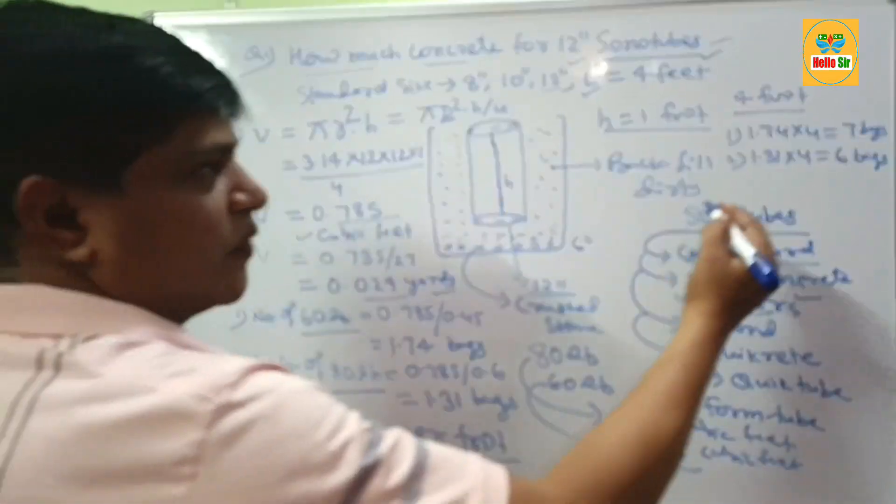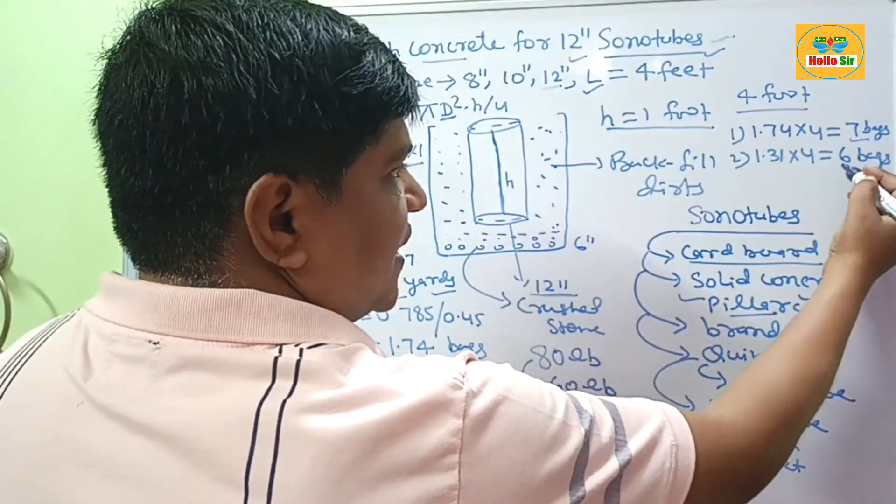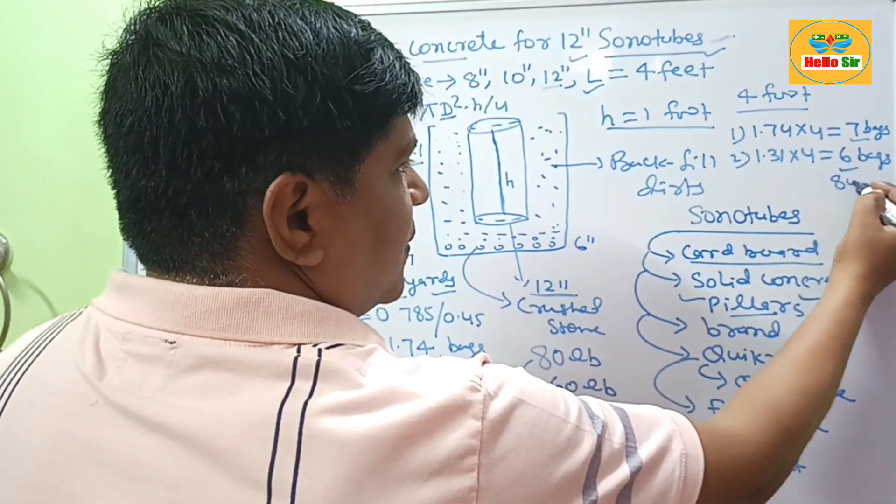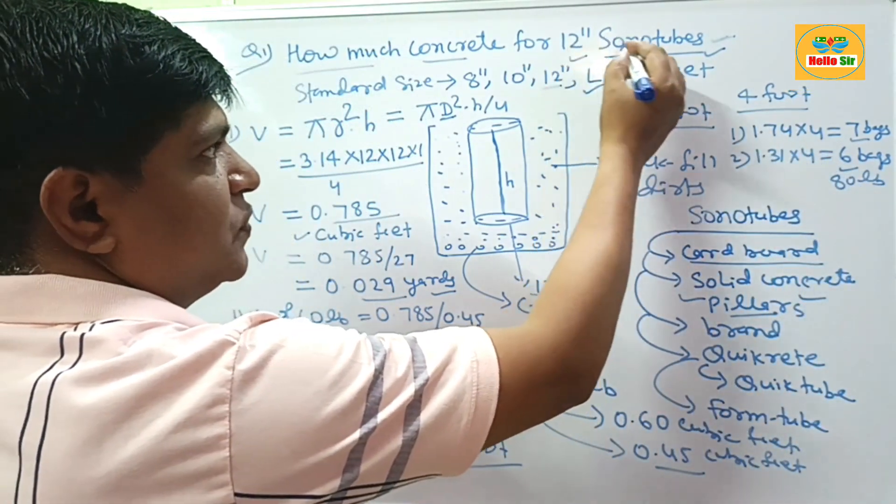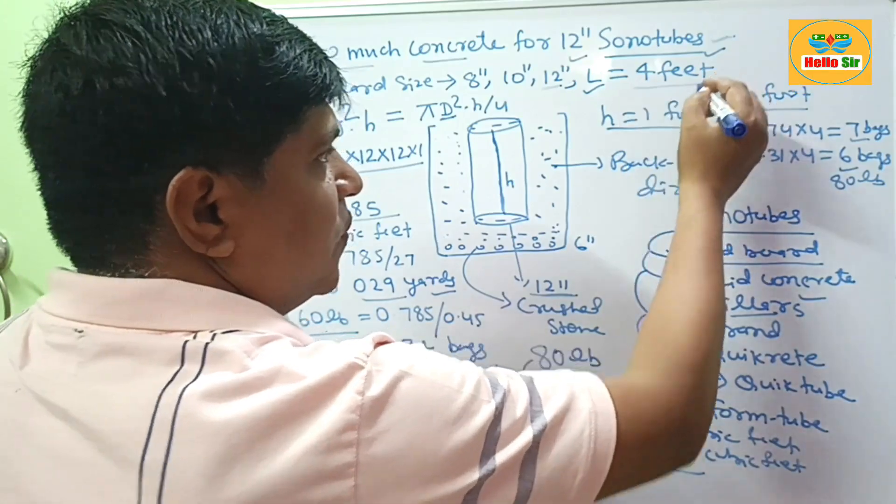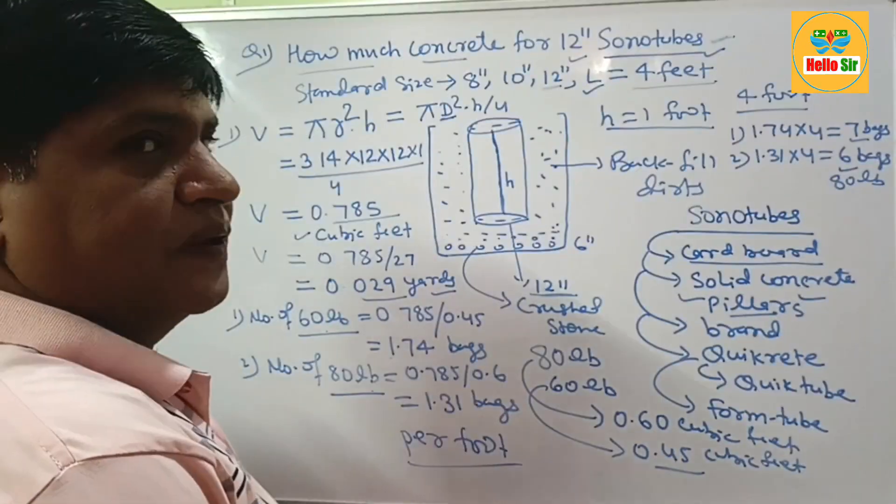It means you will require about 7 bags of 60 lb and 6 bags of 80 lb concrete to fill 12-inch sonotubes for 4 feet length. Thank you.